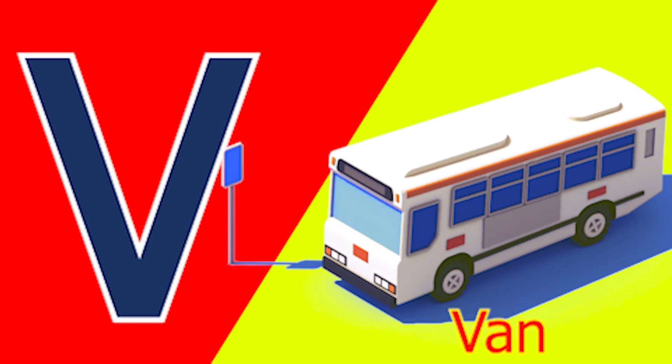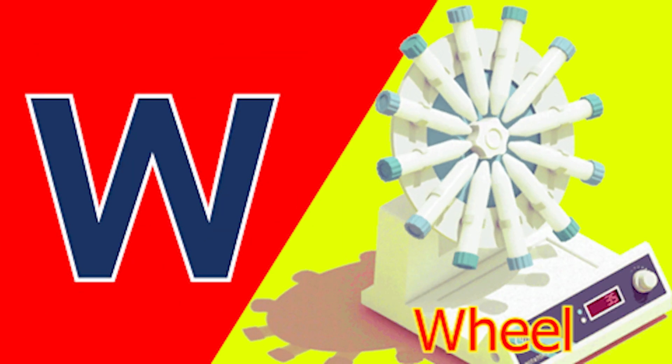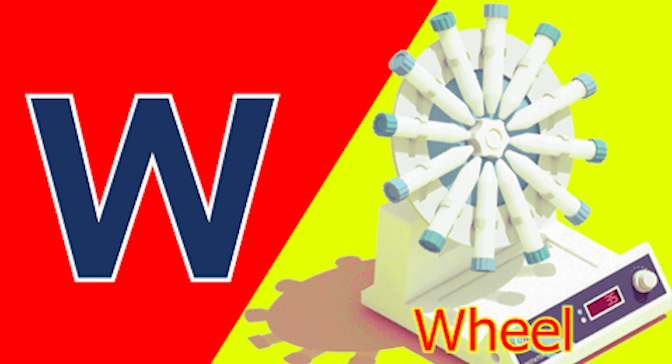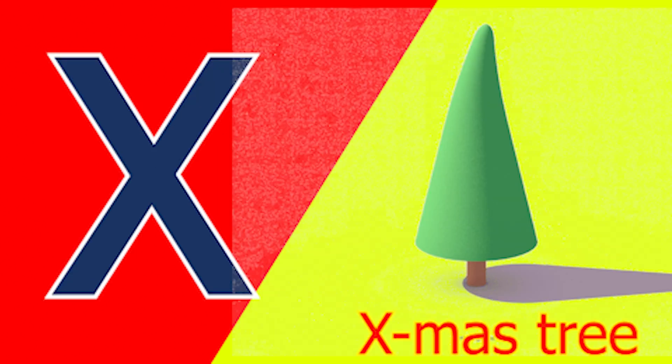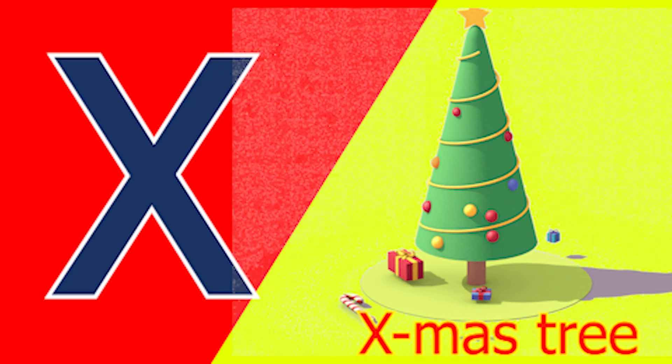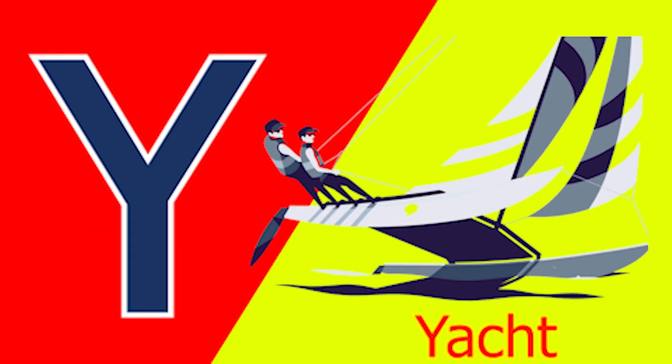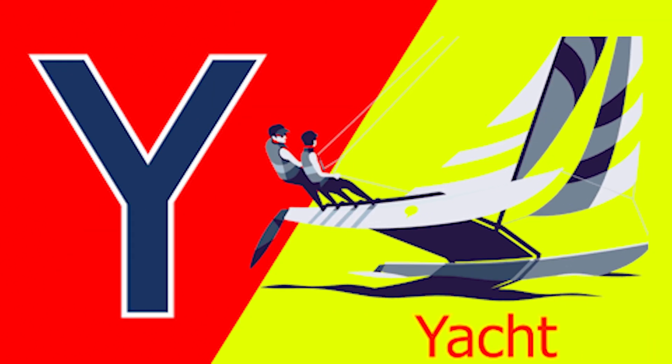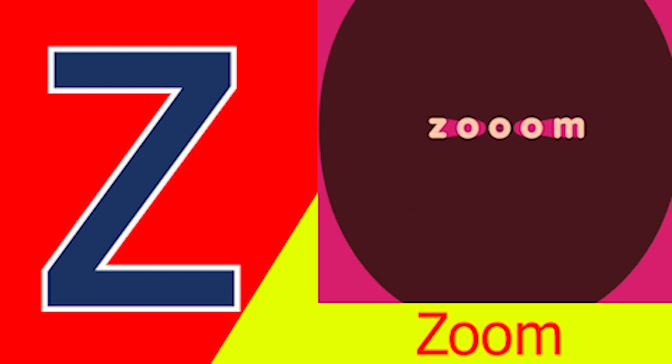V for van, W for wheel and X for accessory, Y for yacht and Z for zone.